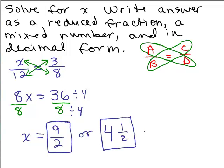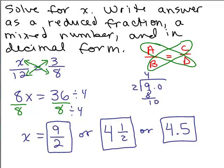How do we write that in decimal form? Hopefully, you know that 1 half is 0.5 which is 4.5 or you could do long division 9 divided by 2 and get 4.5 that way. So there's three ways we could write the answer here.